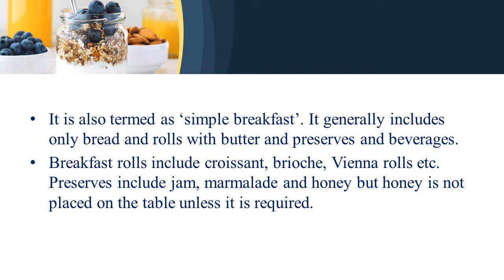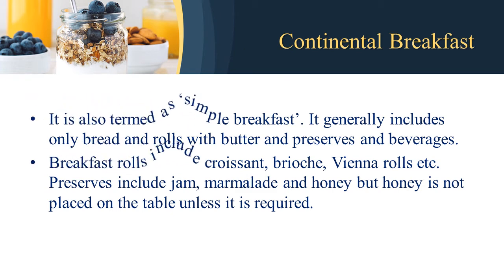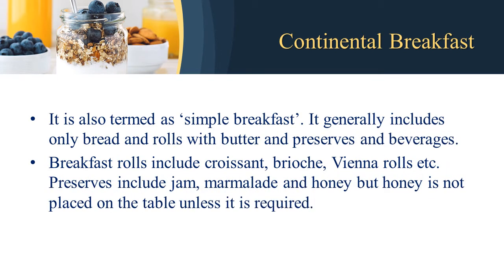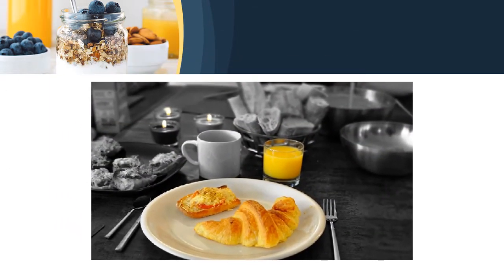There are different types of breakfasts. The first one is continental breakfast, also termed as simple breakfast. It generally includes only bread and toast with butter and preserves, and beverages. Breakfast rolls include croissant, brioche, and Vienna rolls. Preserves include jam, marmalade, and honey — though honey is not placed on the table until requested by the guest. Here in this picture you can see the setup or cover of continental breakfast.